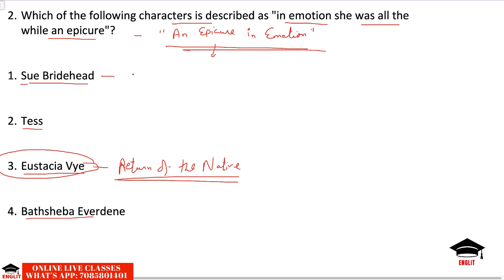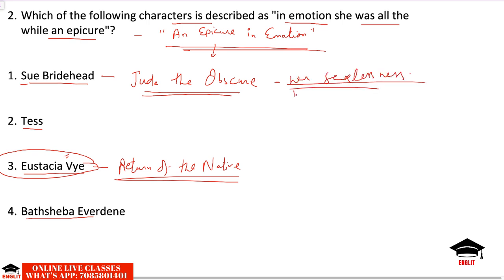Sue Bridehead, featured in Jude the Obscure, was the opposite of Eustacia Vye. The most striking feature of Sue's character was her sexlessness — she believed in marriages but without sexual union, believing in platonic affection, the love of the soul not of the body. Hardy thus created an image of platonic love — making spiritual marriage possible — a concept later propagated by G.B. Shaw: physical marriage versus the marriage of the soul.